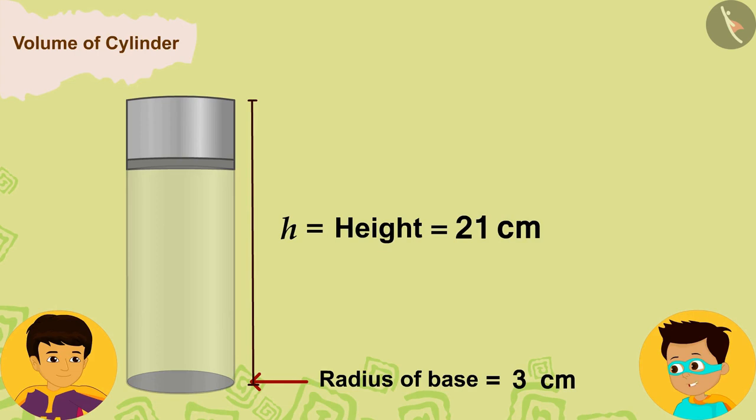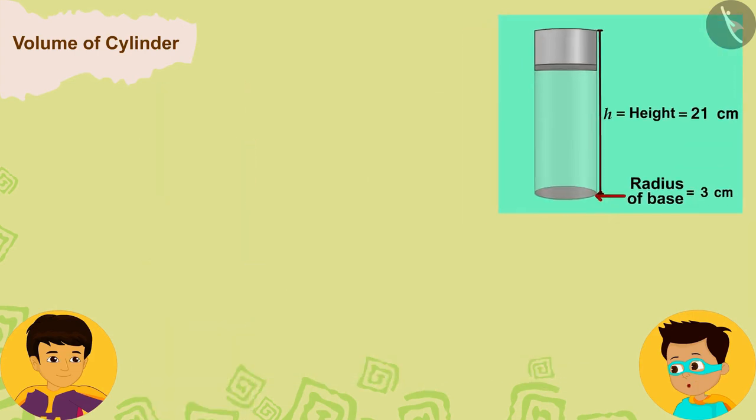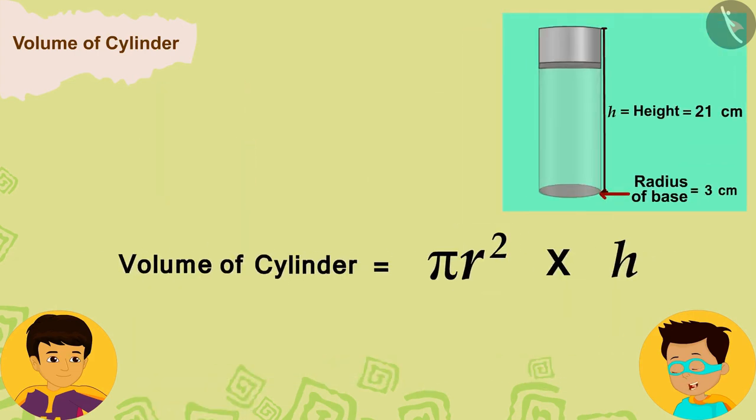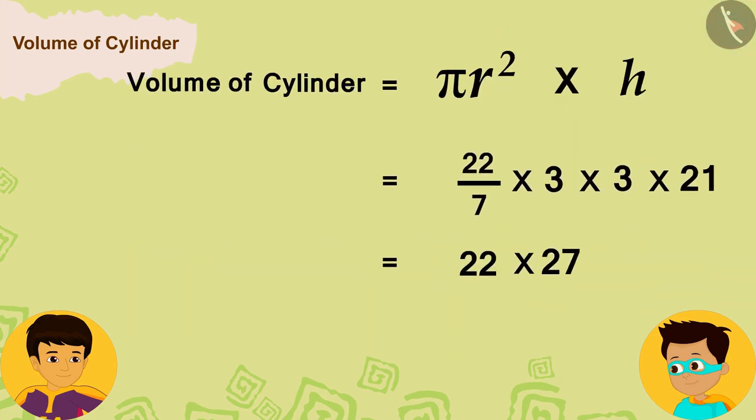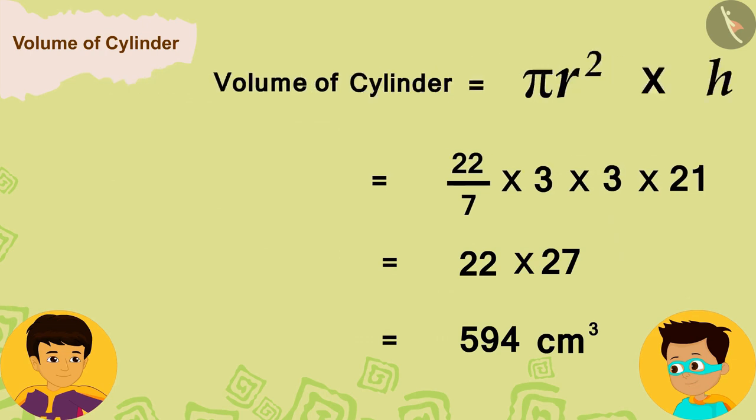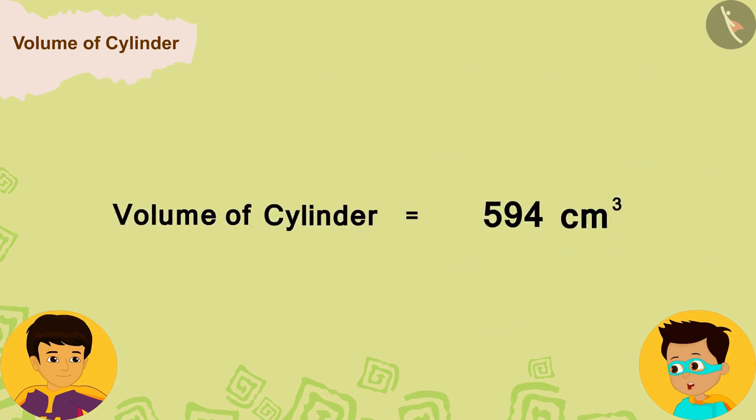The radius of the base of my bottle is 3 cm and the height is 21 cm. Let me solve this equation by writing them in the formula, by replacing the values of R and H.